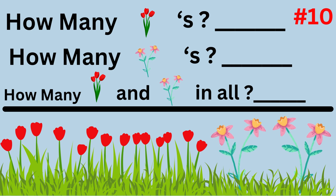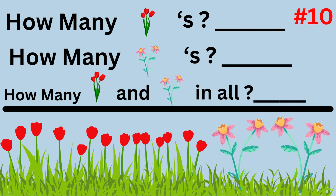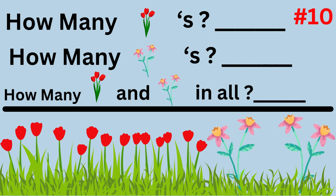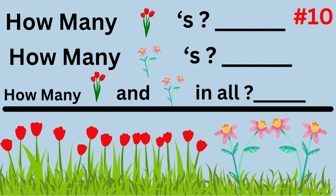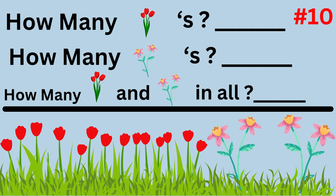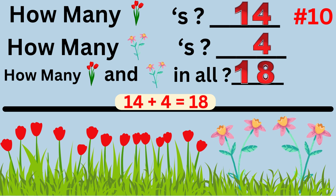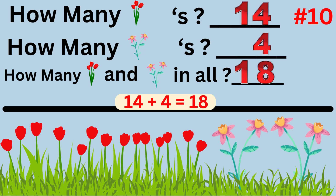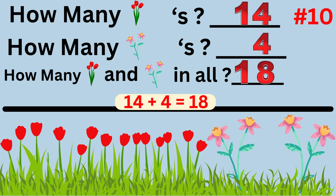Word problem number ten asks: how many red flowers, how many pink flowers, and how many red and pink flowers in all? The answer is there are 14 red flowers and four pink flowers. In all, there are 18 flowers. The number sentence is 14 plus 4 equals 18.